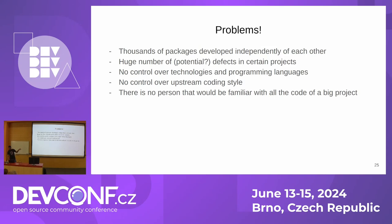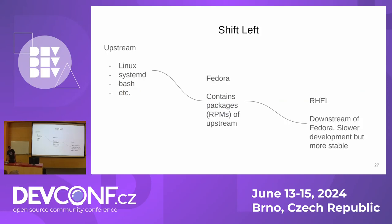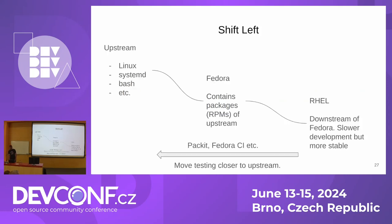How do you deal with this situation? There's a concept called shift left. Shift left testing is an approach in which testing is performed earlier in the life cycle. In simple words, you move testing closer to upstream — either you do it in Fedora or you try to push it towards upstream. Some projects that can help are Package CI and Fedora CI, which are targeted more toward upstream.